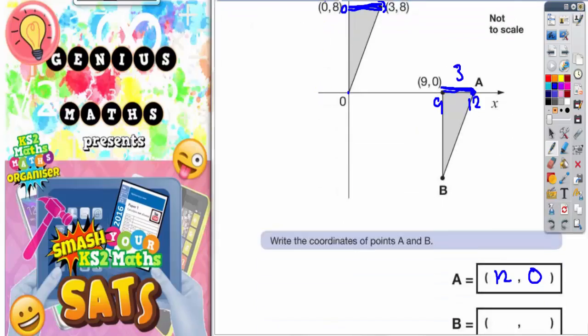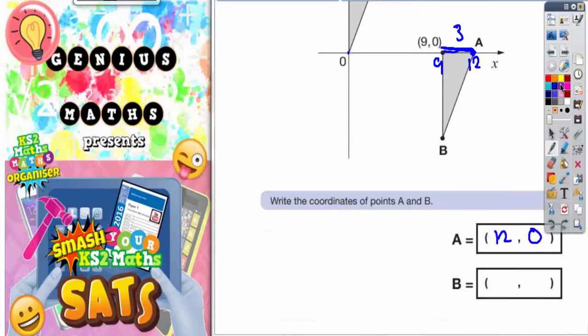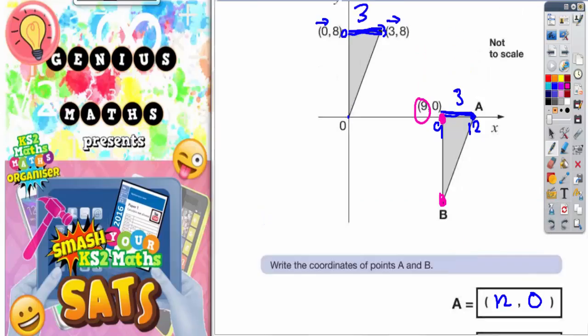As for point B, well if you start at 0 and go across when you get to this point here you've got 9 across. So point B is already level with a 9 across. So point B has got to be 9 across. The question is how many down has it gone.